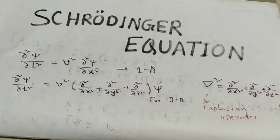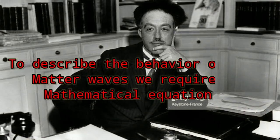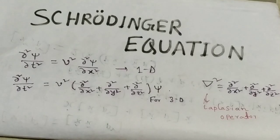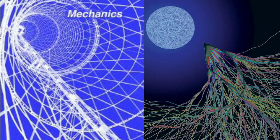To describe the wave nature of particles, according to the de Broglie hypothesis, materialistic particles move like waves — matter waves. To describe the behavior of matter waves, we require a mathematical equation. That mathematical equation in quantum mechanics is called the Schrödinger wave equation. It is a basic law, like Newton's law of motion is fundamental in classical mechanics.